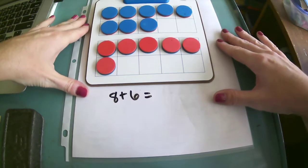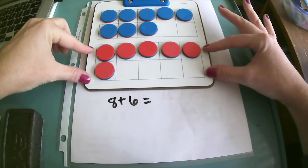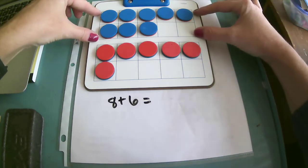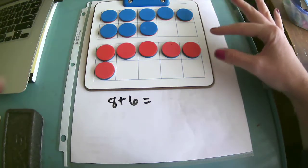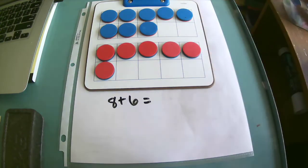As you can see here, I have a 10 frame. I have eight and I have six. But I would really like to fill up this first 10 frame to make it easier for me to add, because adding something to 10 is easy for me. It's that friendly number that I like to use.